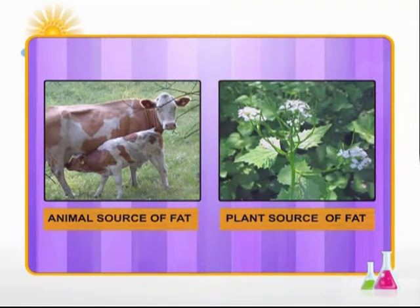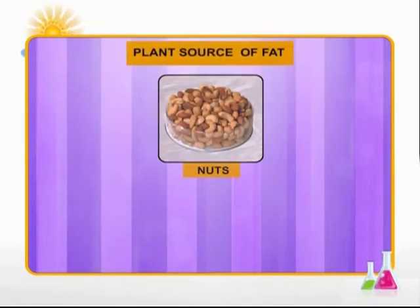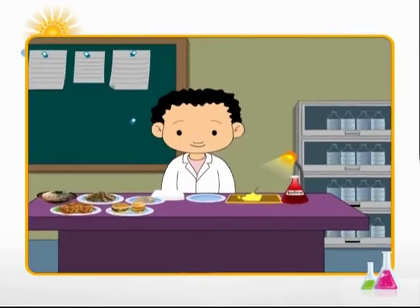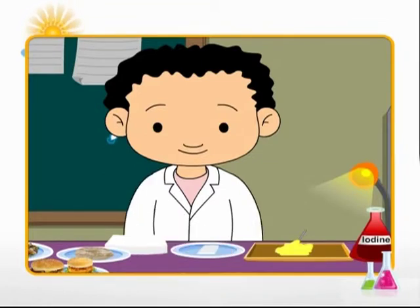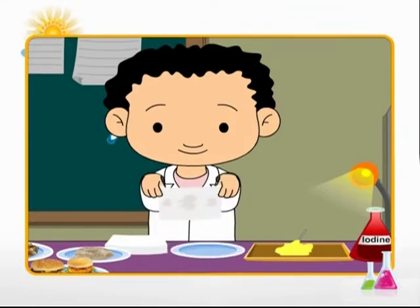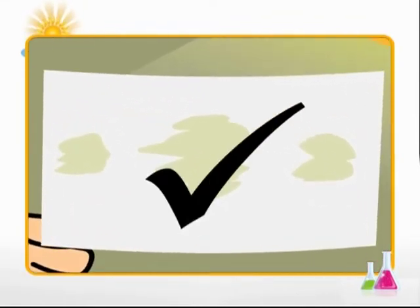Fat is obtained both from plant and animal sources. Milk, cheese, and butter are animal sources of fat, whereas nuts, soya bean, and seeds of mustard are plant sources. Fats are a rich source of energy and even insulate our body against heat loss. To test for fats in a food item, take a small quantity, wrap it in a piece of paper and crush it. Take care that the paper does not tear. Straighten the paper and observe it carefully — does it have an oily patch? Hold the paper against light and find out if you can see the light faintly through the patch. Brown oily patches confirm the presence of fat in food.